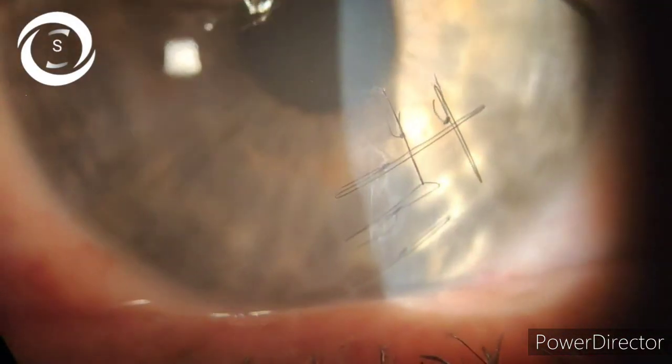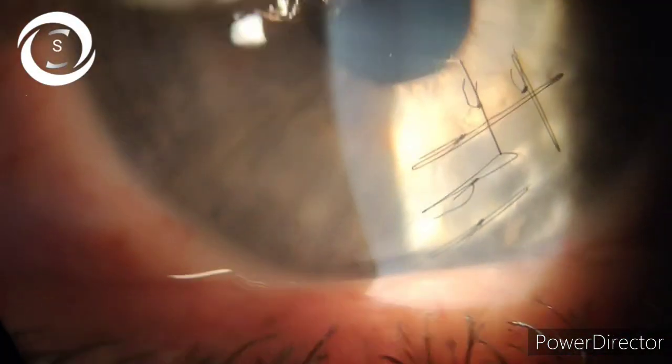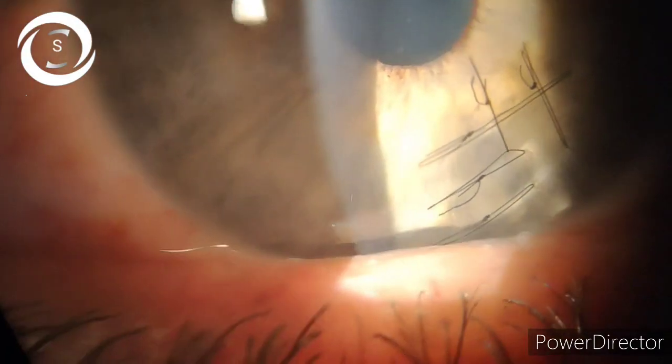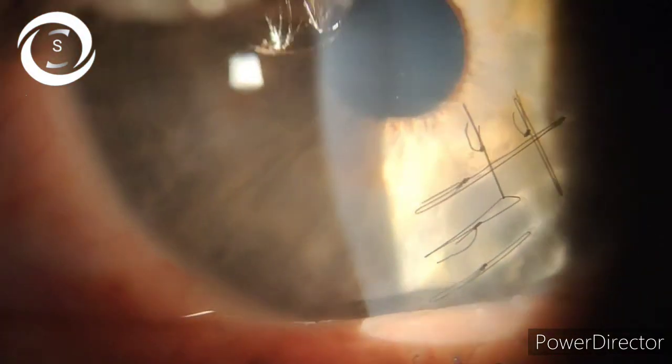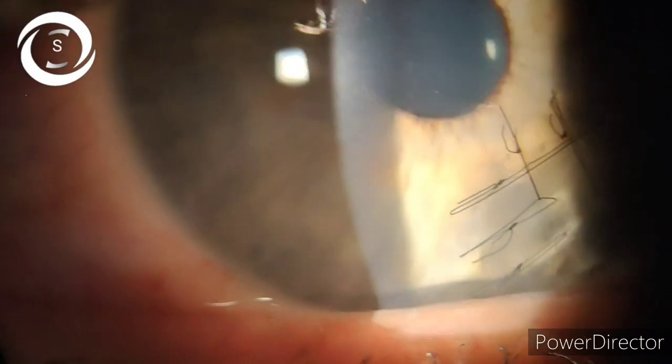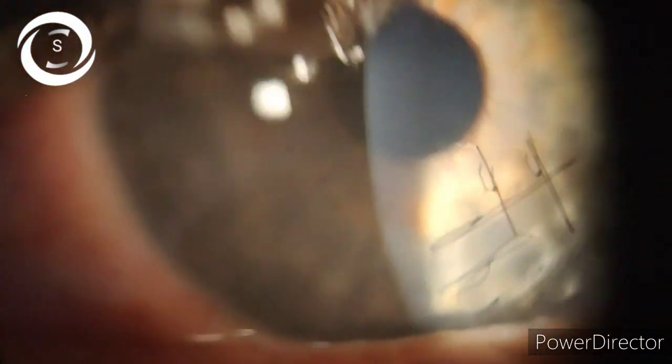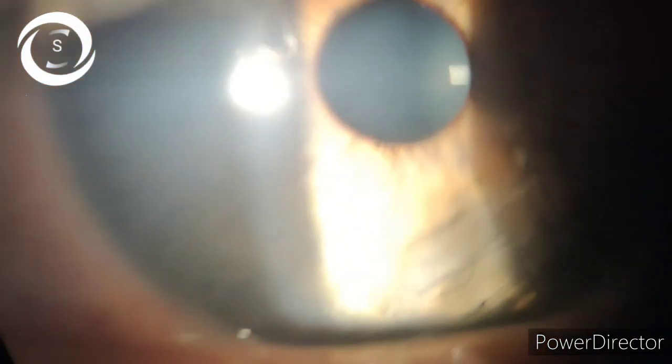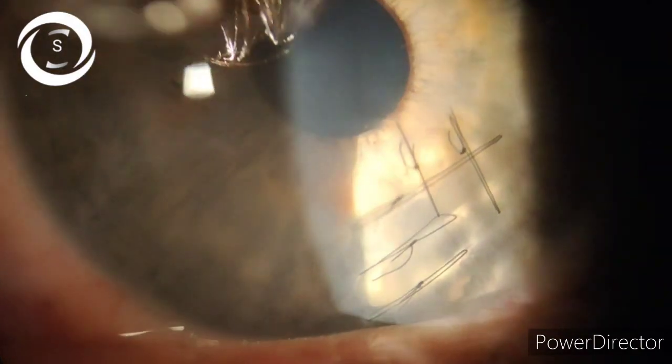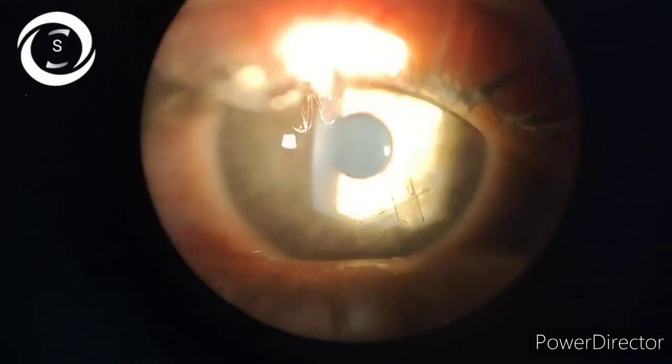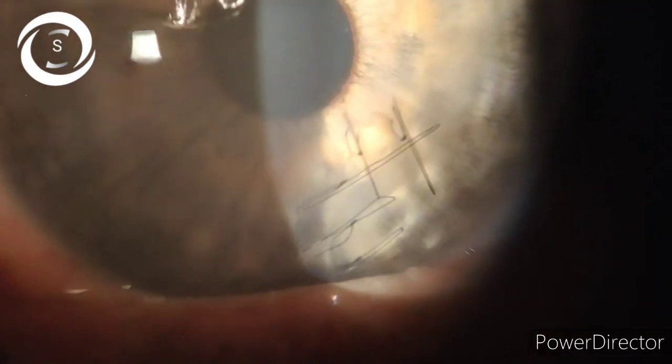You can see how post-op two weeks the corneal sutures look like. Sutures are not very tight, not very loose, equidistant. Anterior chamber is well formed, pupil is round, regular, reactive.